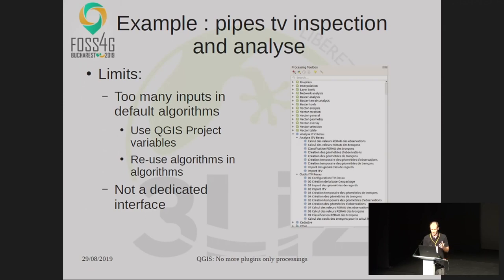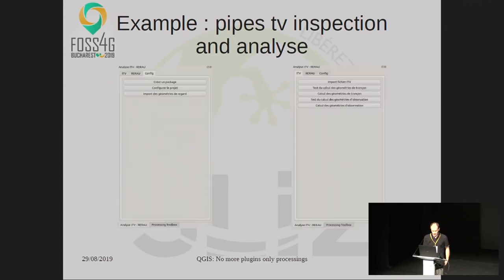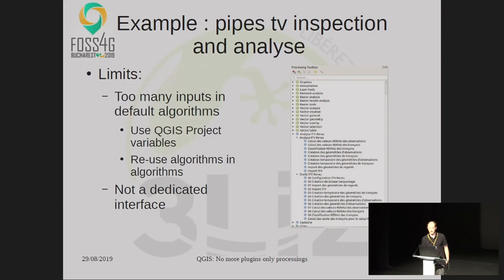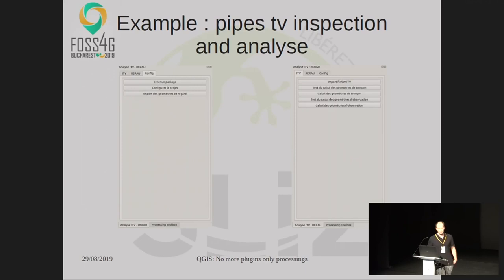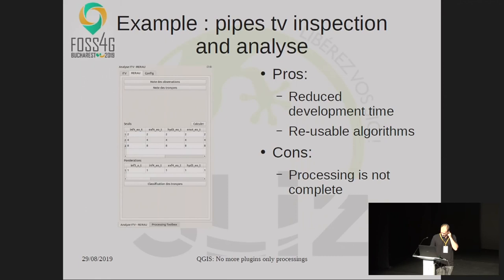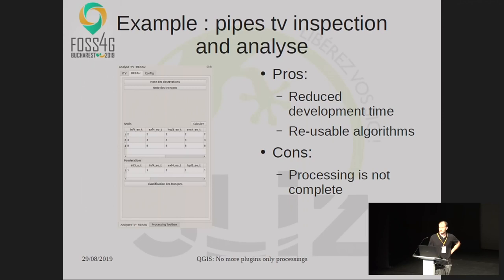I didn't develop a dedicated interface for this. But my customer said it was good and it works, but he wanted something specific to his demands. So I just created a dockable file with some buttons and tabs. The user just clicks one button to launch algorithms, get the forms, specify inputs, and get the results. By using QGIS Processing, I reduced my development time and have reusable algorithms. If my customer wants to create models based on these algorithms, he can — he can automate and run batch processing.